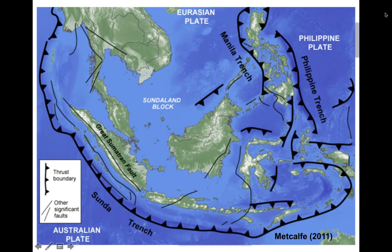As you can see in this slide, some subduction zones can be quite complex. In the Philippines we have double subduction zones, and south of the Philippines we have Sulawesi and all these areas with a very complex tectonic setting. We're going to mainly focus on Java and Sumatra, and then later move into Myanmar. Java and Sumatra share the same subduction zone — the Sunda trench.